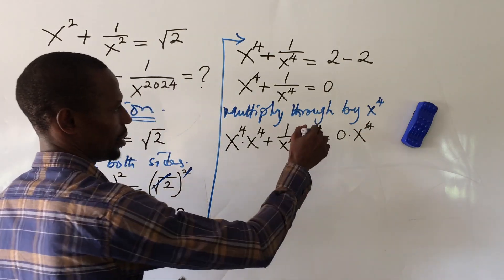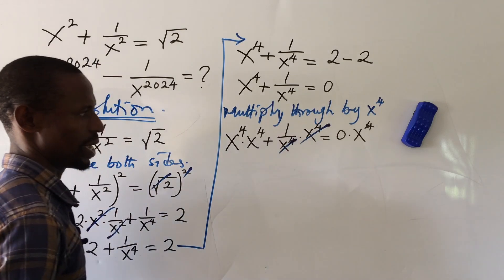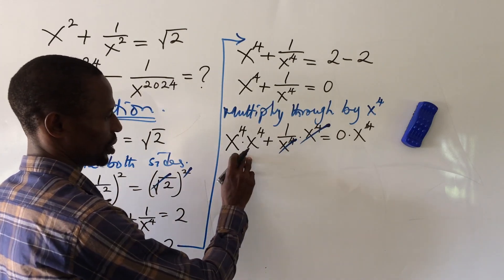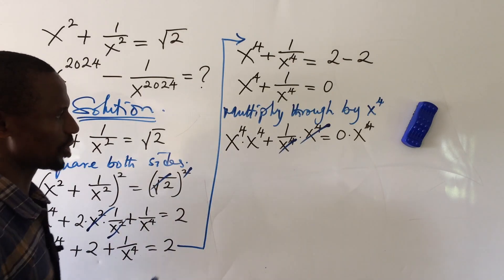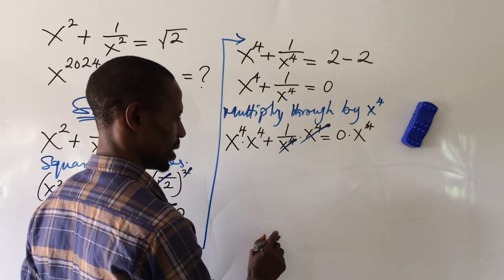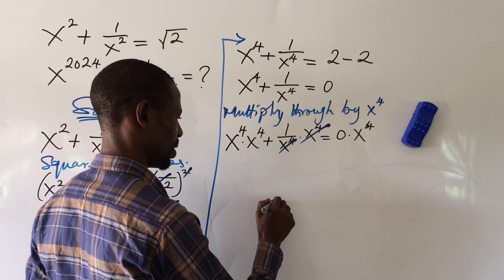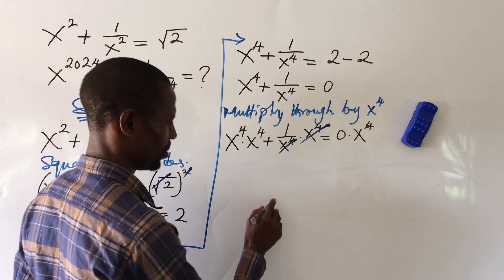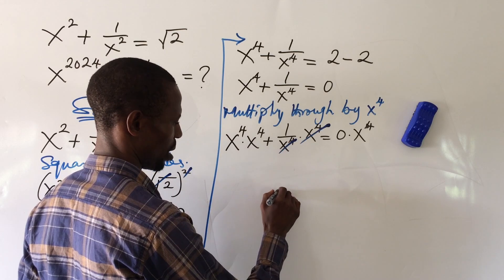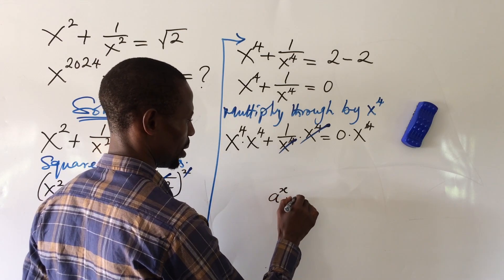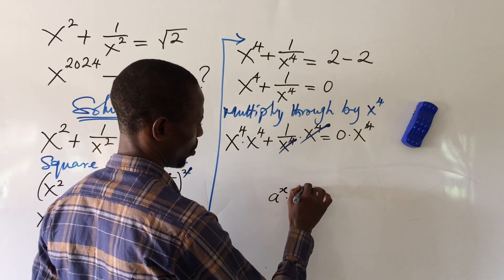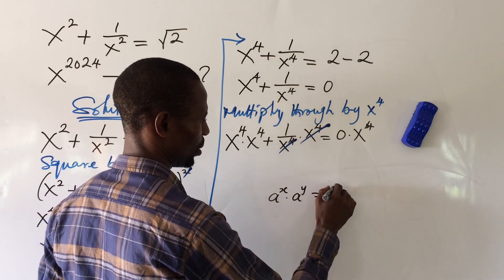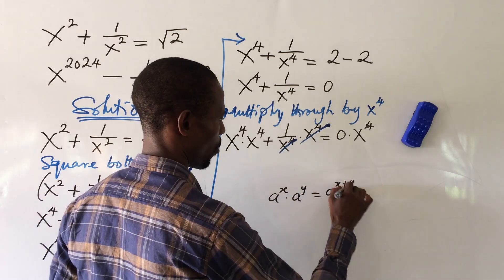Now applying the multiplication law of indices: if you have a to the power of x times a to the power of y, this equals a to the power of x plus y, because the bases are the same and on a multiplication sign you add the powers.